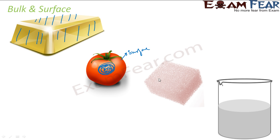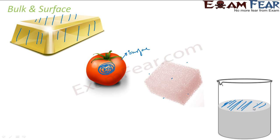For a sponge shaped like a cuboid, all six faces exposed to air form the surface, and whatever is inside is the bulk. Similarly for water in a glass, the top part exposed to air is the surface, and everything inside is the bulk. Bulk and surface are very critical terms.